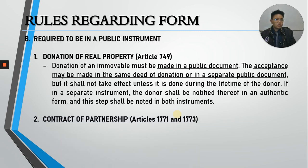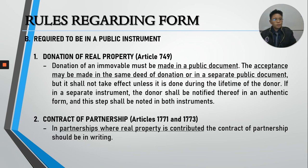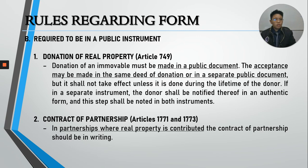Number two: in case of a contract of partnership where real property is contributed. Partnership is generally a consensual contract — if A contributes cash, B contributes cash, and C contributes industry, that is valid without formality. But if A contributes real property (land), B contributes cash, and C contributes industry, the contract of partnership is required to be in writing, plus an inventory of the immovable must be attached. This is covered by Articles 1771 and 1773. Article 1772 talks about registration. More will be learned when we discuss partnerships.